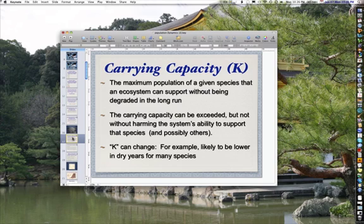Carrying capacity can change. For example, it's likely to be lower in dry years for many species. And if climate change is what scientists say it is, we're likely to have many drought years in the future. And both China and India are quite concerned that they could have trouble trying to provide enough food for their people if the carrying capacity is decreased because of drought.